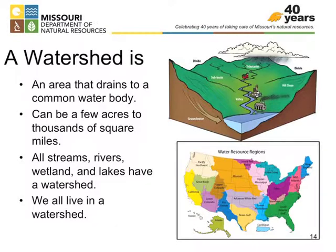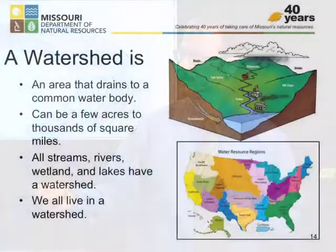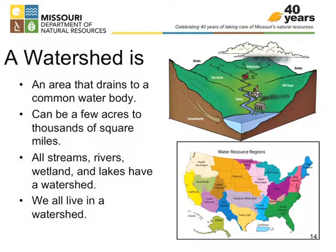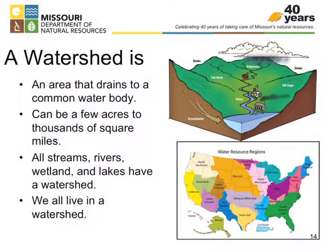I'm talking a lot about a watershed, so I probably ought to describe what a watershed is. I'm sure most of you already know that it is an area that drains to a common water body. It can be a few acres or thousands of square miles. All streams, rivers, wetlands, and lakes have a watershed that drains to it, and, of course, we all live in a watershed. This map here is the largest group of watersheds, what we call the HUC-2, and I'll describe that here in just a minute. We are, of course, in the Missouri River watershed at this time.